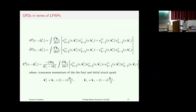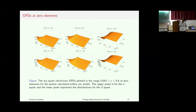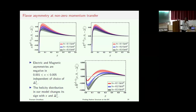We have the light-front wave functions and the corresponding relations of these GPDs in terms of them. The GPDs are functions of x, xi (which is zero here), and t, the momentum transfer. K-perp, K-perp prime, and K-perp double prime are the initial and final struck quark momenta. We evaluate those GPDs using our model light-front wave functions. The upper panel shows results for U-bar and these are results for D-bar, for the three GPDs H, E, and H-tilde. These distributions are similar for both, and even the amplitudes are similar.